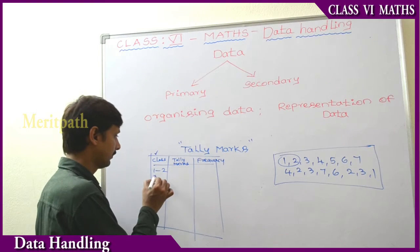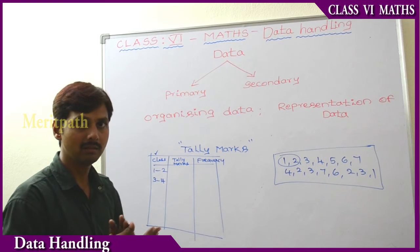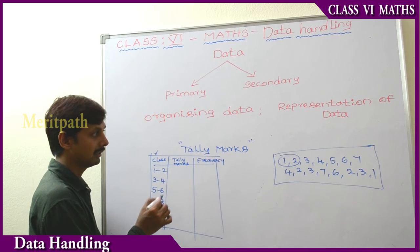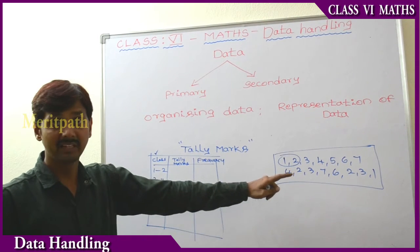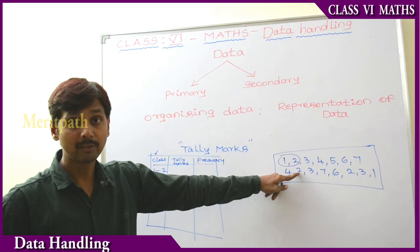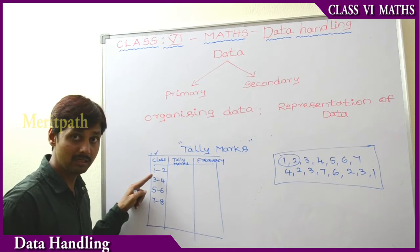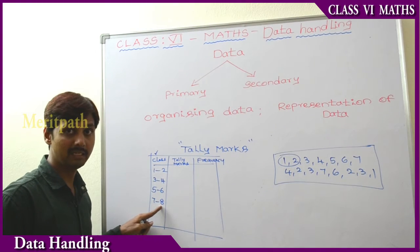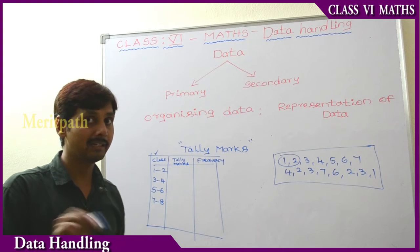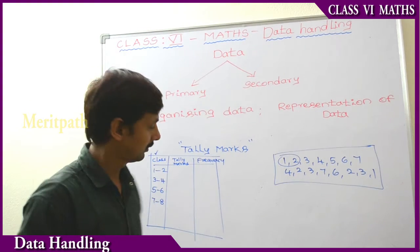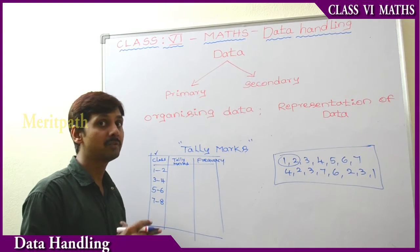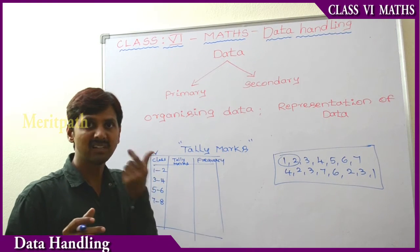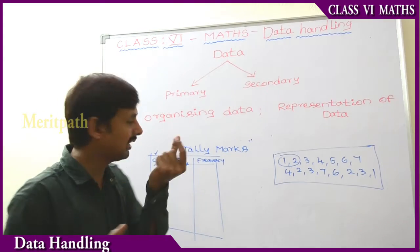The next group is 3 to 4 as one group, then 5 to 6, and 7 to 8. We can observe that the least number from this data is 1 — that's the reason we started with 1. The highest value is 7, so we go up to 7 to 8. So we have class groups: 1 to 2, 3 to 4, 5 to 6, and 7 to 8.